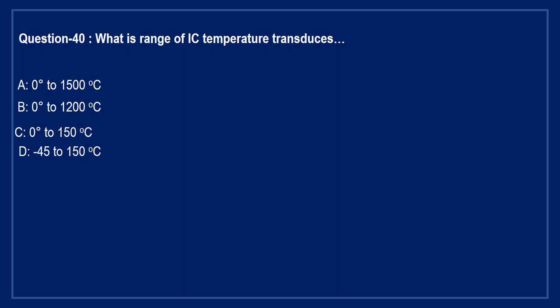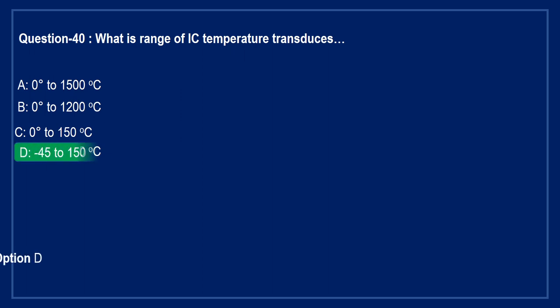Question: what is the temperature measurement range of IC temperature transducers? Option A: 0 to 1500°C. Option B: 0 to 1200°C. Option C: 0 to 150°C. Option D: minus 45 to 150°C. The correct answer is Option D — minus 45 to 150 degree centigrade.